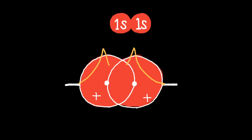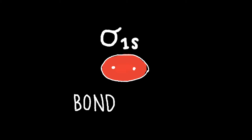These two S orbitals can combine in two ways. In yellow, we see where in each atom electrons can be found. When these two atoms combine, the green line shows where electrons can be found in the new orbital. There are no nodal planes and most of the electrons can be found in the middle.